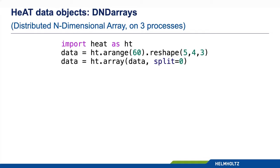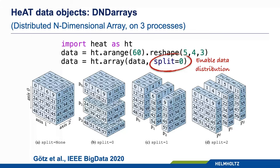The core of the library is the heat data object called the DNDArray, or distributed n-dimensional array. You import heat just like you import numpy, and you define an array the same way. In this case I'm defining a three-dimensional data object called 'data'. The difference is the split attribute — this is what enables data distribution. Setting split=0 means the data will be distributed along the first axis across the processes.